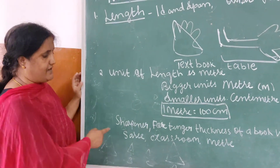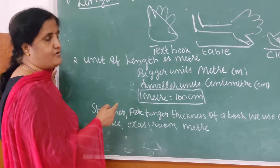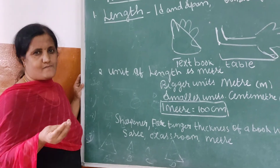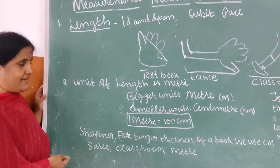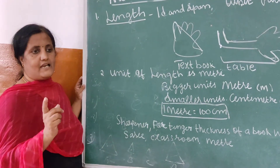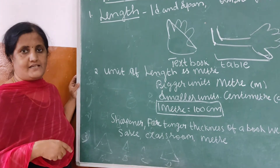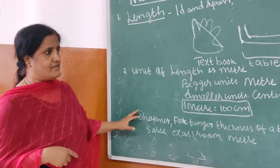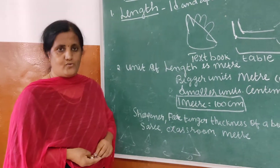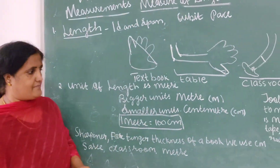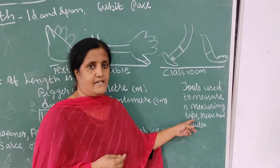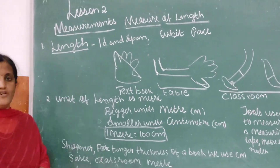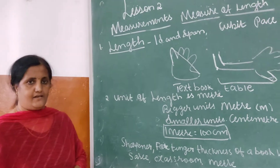See children — a sharpener, four fingers, or the thickness of a book: we use centimeter because it is a smaller unit. The length of a sari or the length of a classroom is measured by meter. So to measure all these things we need tools. The tools used for measuring length are a scale, a tape, a meter roll, and a roll-up ruler.